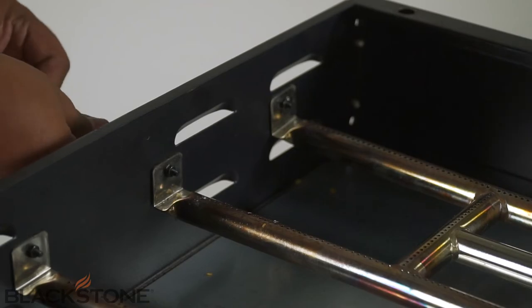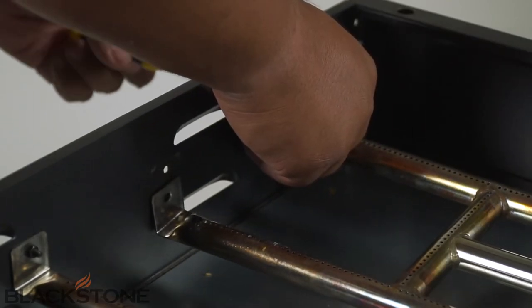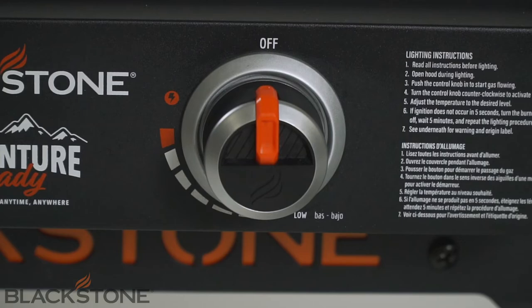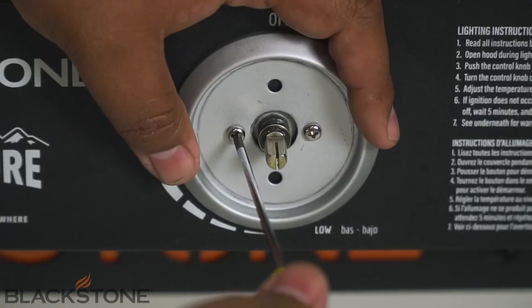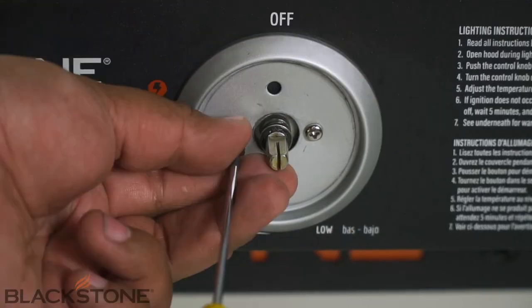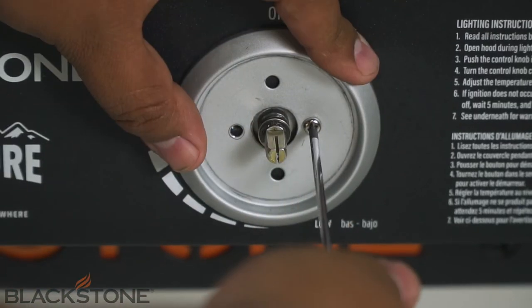Next, you will need to remove the burner tube from the griddle by removing the screws holding the tube in place. Because of the size of the 17-inch, 22-inch, and 28-inch griddles, you will also need to remove the screws underneath the knob to give you more room to lift the burner tube from its slot.